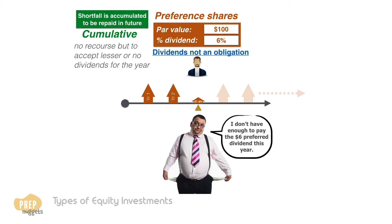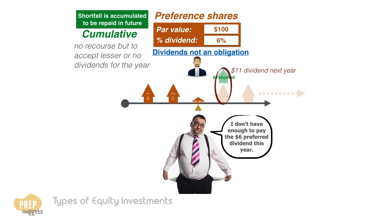In this case, the $5 shortfall is accumulated to the next year. The preferred stockholder can expect $11 dividend per share next year — that is, if the company has the means to pay.